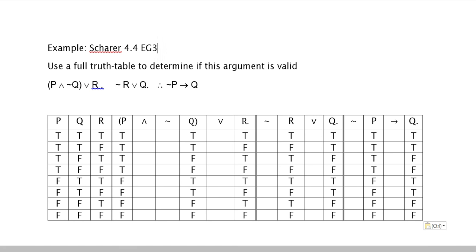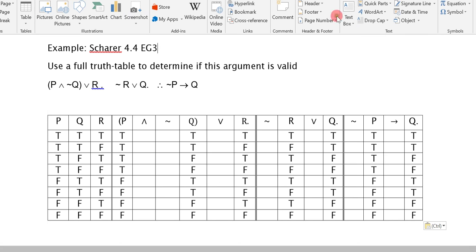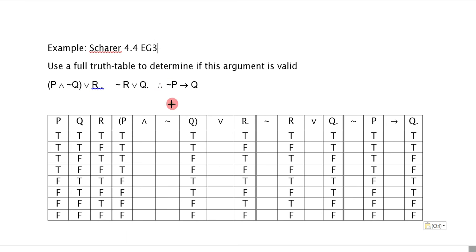What I want to do next is actually identify my main connective. If I look at the first premise, the brackets clearly indicate that this is one unit here, and then the OR binds everything. I'm just going to insert a little arrow here that will indicate to me that the OR is the main connective.